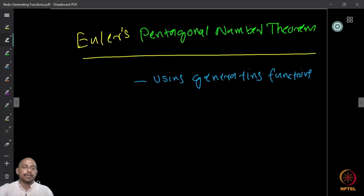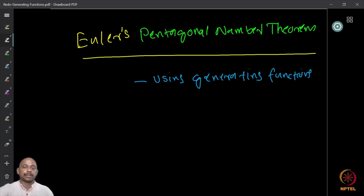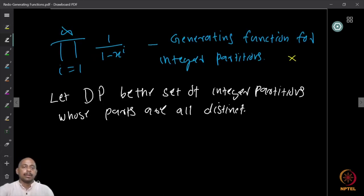We are going to prove a famous and beautiful theorem — Euler's Pentagonal Number Theorem. The proof is very nice and you will enjoy it. We are going to use generating functions to prove this; there are several proofs but this one is in particular very beautiful.